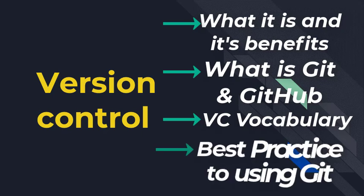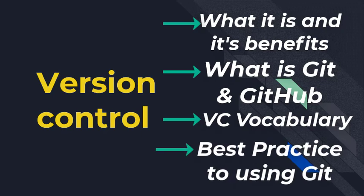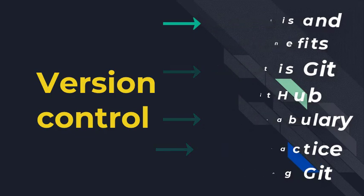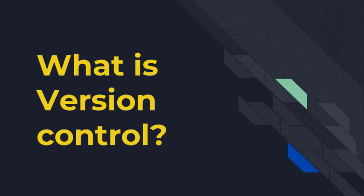We will then quickly go over some best practices for using Git, but the best way to get a hang of this all is to use it. Let's get started. So, first thing first: what is version control? Version control is a system that records changes that are made to a file or a set of files over time.